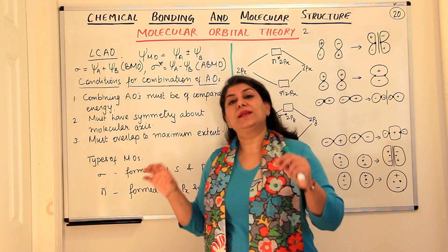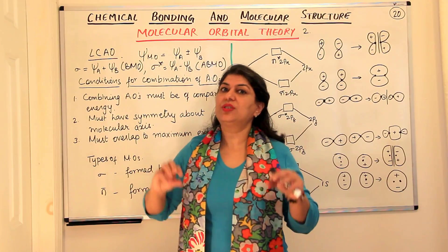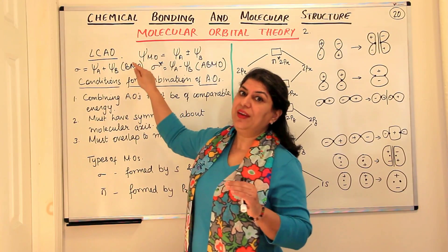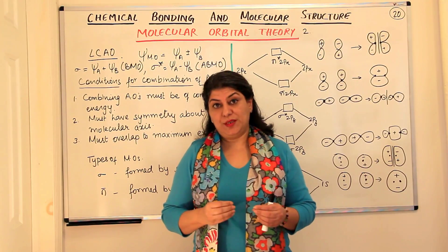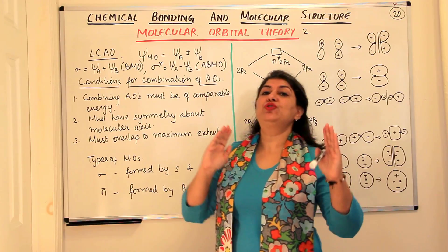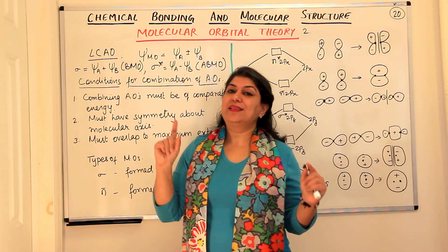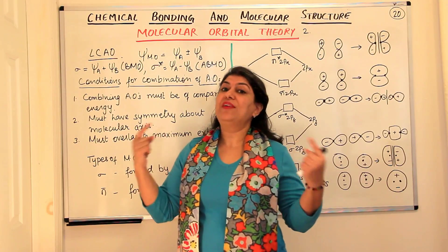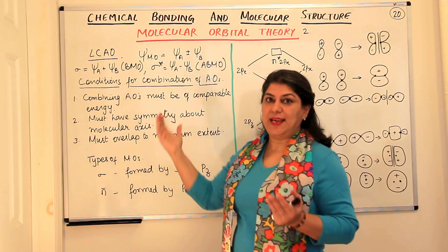But in order to understand the molecular orbital theory, we use the wave function psi to explain the molecular orbitals. Let us assume that you have two hydrogen atoms, both having a single electron, and therefore both those electrons would have wave functions psi-a and psi-b.